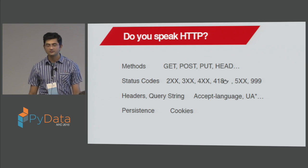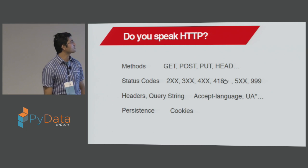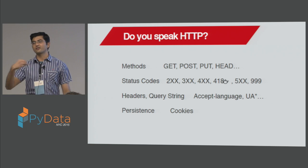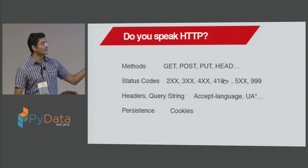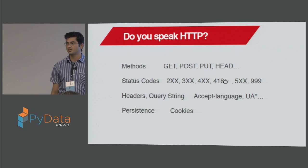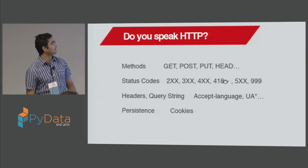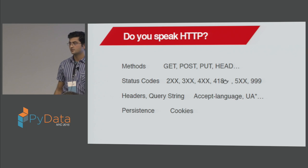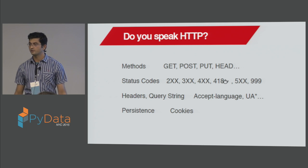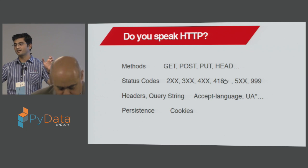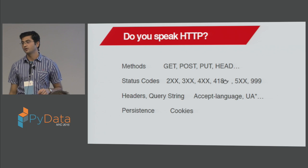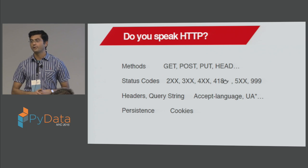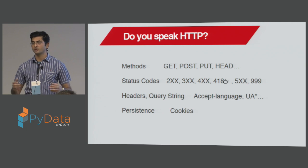These are the standard HTTP methods: GET to retrieve data, POST to generate data on the server, PUT to update data, and HEAD to request only headers. These are standard protocol methods. The key point here is that HTTP is very important when doing web scraping. You have a resource and a method associated with it, and the server behaves differently based on the method. Normally when you make a web request in a browser, it's a GET. When you submit a form, it's typically a POST.